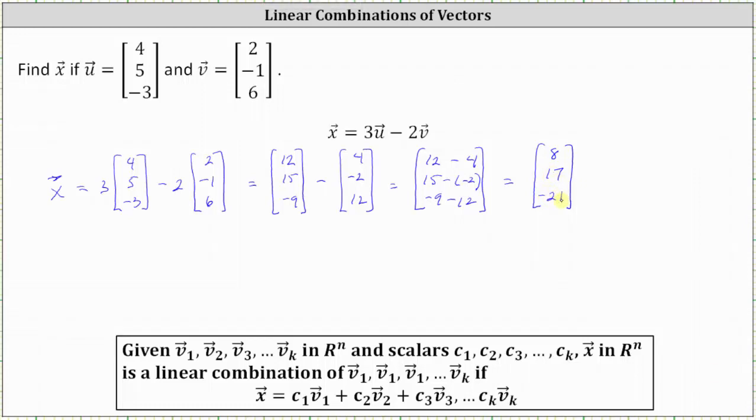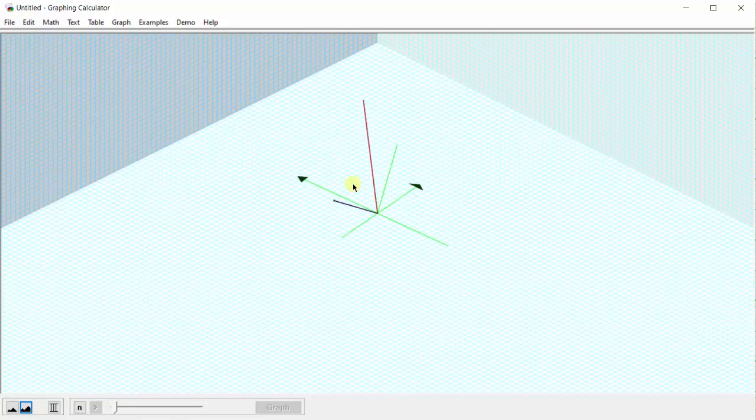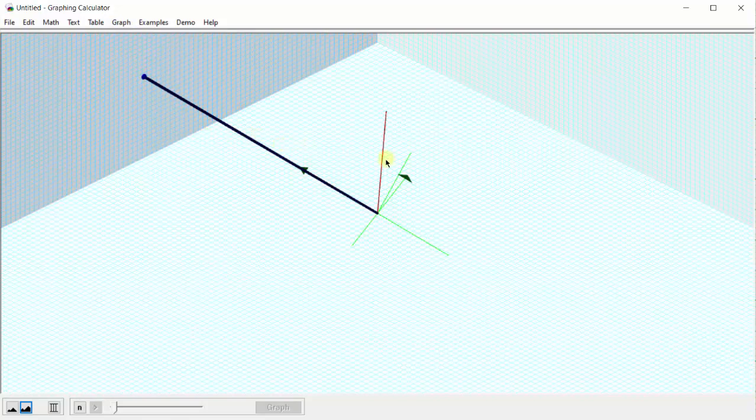And now let's take a look at this graphically. Vector u is graphed in blue, and vector v is graphed in red. For the next step, we will graph three times vector u, which we see here. And now we will graph negative two times vector v with the initial point at the terminal point of three times vector u.